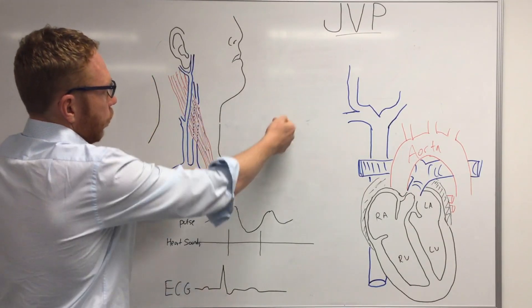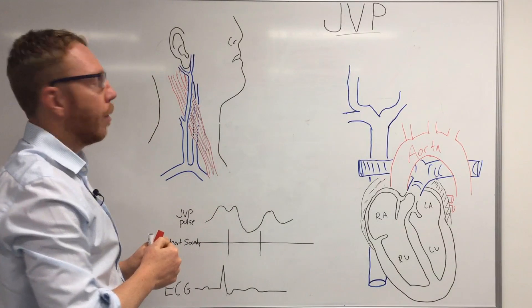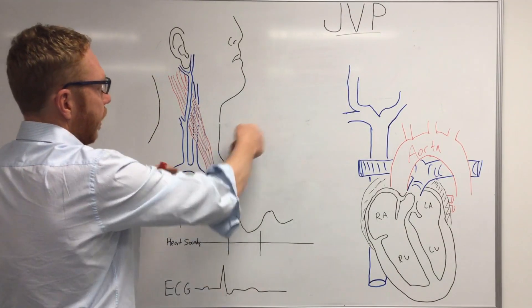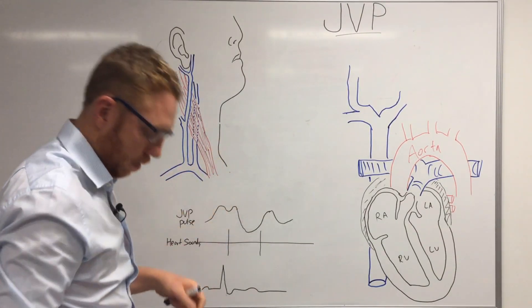It will come together with the other opposing jugular vein or the brachiocephalic vein which will go into the right atria.